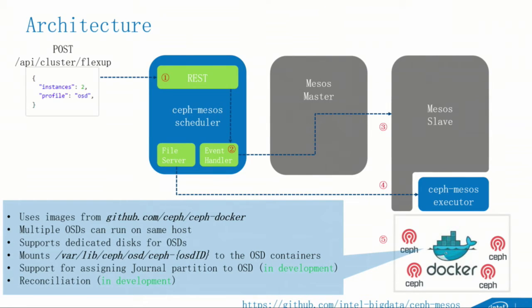Our implementation allows running multiple OSD instances on the same physical host. We use Mac VLAN as the network solution, so every container will have its own IP address with the same port — there's no conflict at all. We have designed this to make sure containers on the same host are aware of the topology.